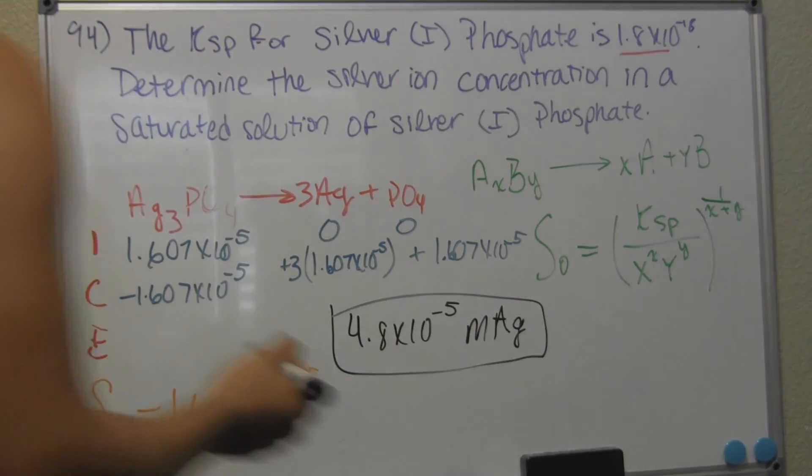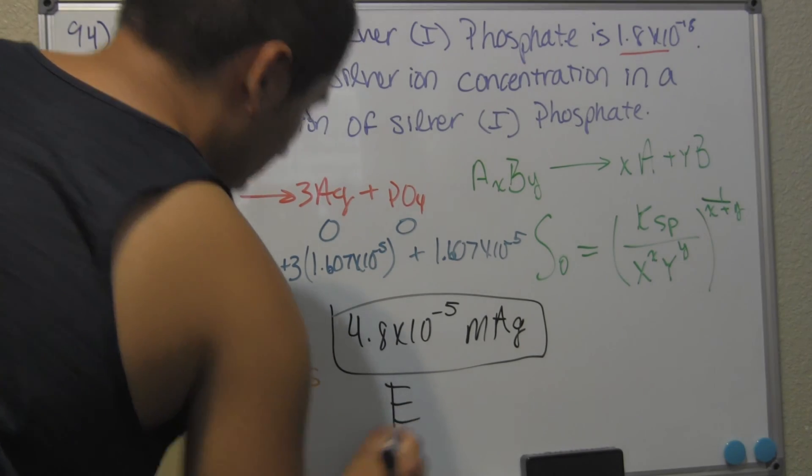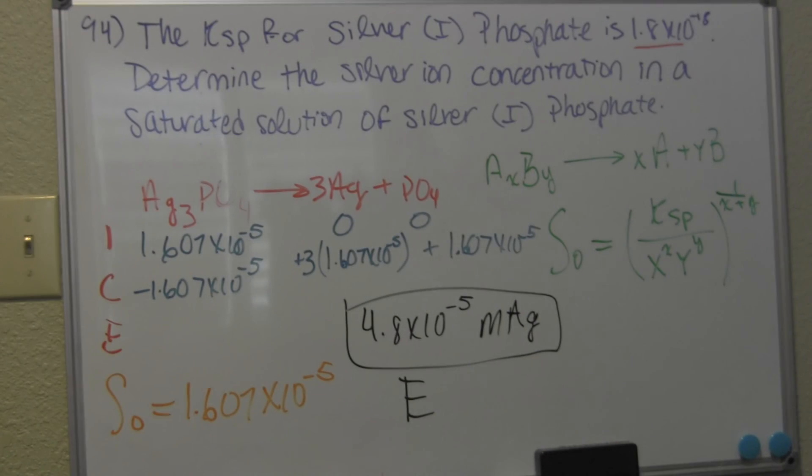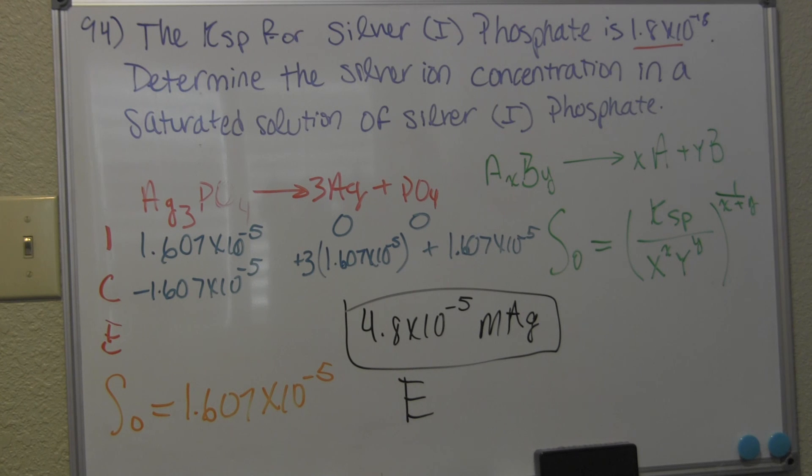And if you're doing this from the problem set that I'm doing it from, which is number 94, the answer, the letter answer is going to be E. All right. So, thanks for watching. I hope everything made sense. If not, go ahead and rewind the video. I hope you will be able to understand it. And hopefully you'll see that it's much easier to use that than the ice table. Thanks.